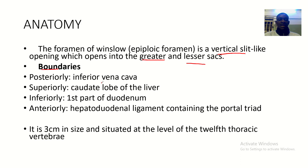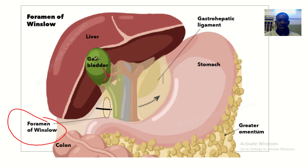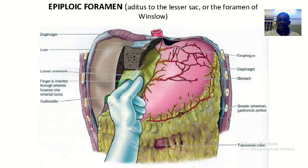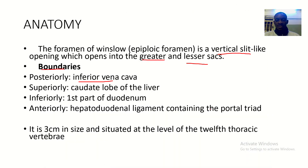Now, what are the boundaries? Posteriorly, the foramen of Winslow is bounded by the inferior vena cava. Superiorly by the caudate lobe of the liver. Inferiorly by the first part of the duodenum — that's where the small intestine starts.